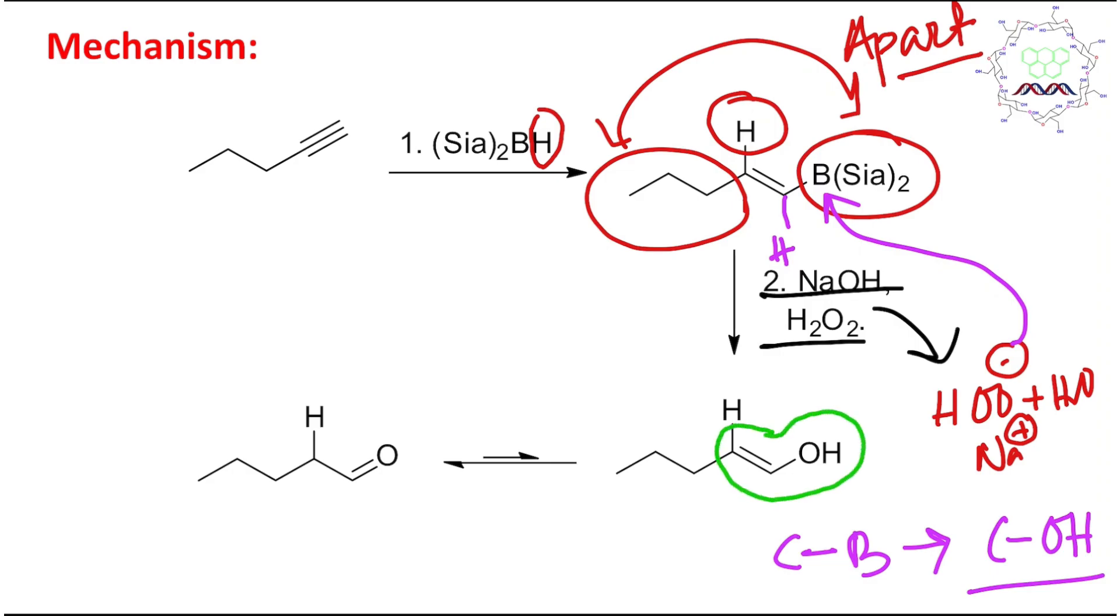If you look at this, this is an enol because we have taken one alkyne. There were two pi bonds. One pi bond got reduced by this boron-hydrogen, but one pi bond is still remaining. We know that enols are not that much stable, but its tautomer is.